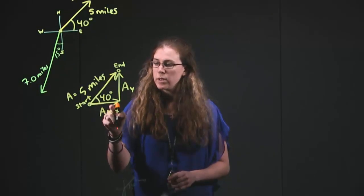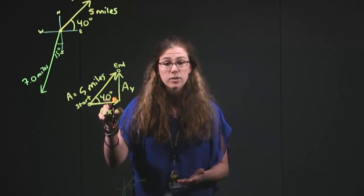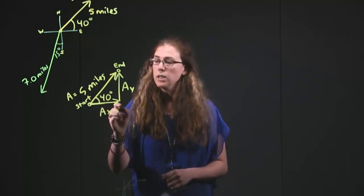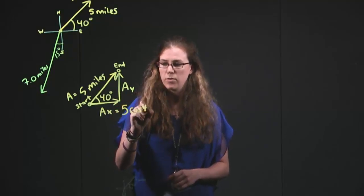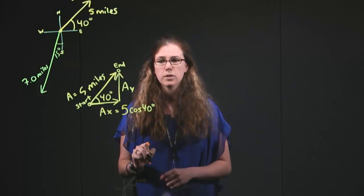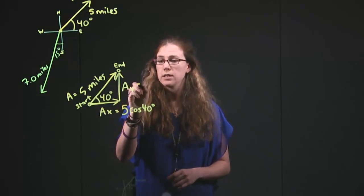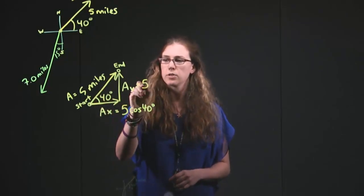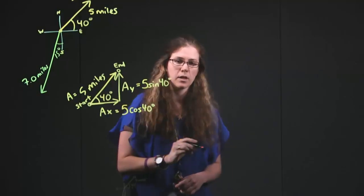Now, if we look at this piece, it's next to this angle here. Next to, we look at our equation sheet, our trigonometry, and that means we use the cosine. So we use the full 5 miles times the cosine of 40 degrees. For Ay, we're going to use the sine, it's opposite, it's as far away from the angle as it can get, the opposite. And so that's 5 sine 40 degrees.